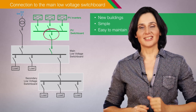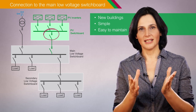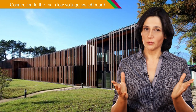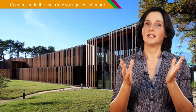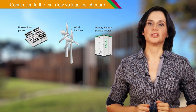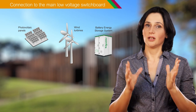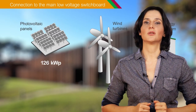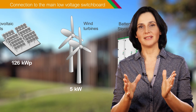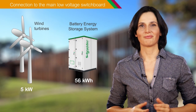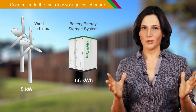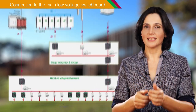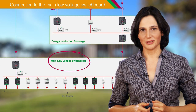This architecture can be illustrated with the Care Grid project at Morbian. This new office building integrates several local energy sources: photovoltaic production of 126 kW peak, two wind turbines, and storage. All local sources are brought together and connected to the main low voltage switchboard.